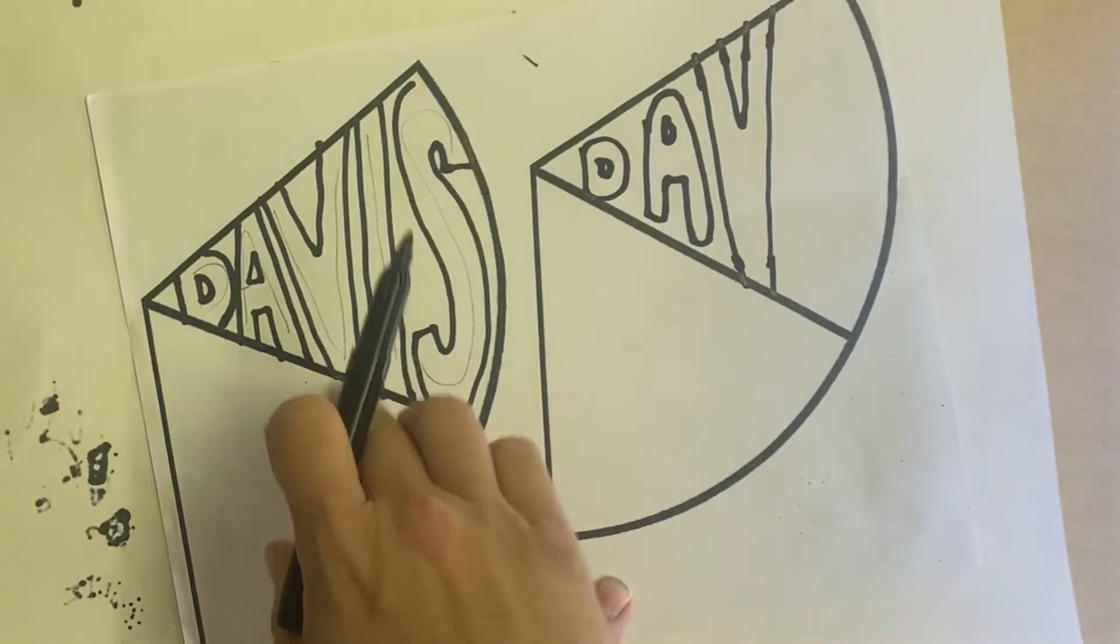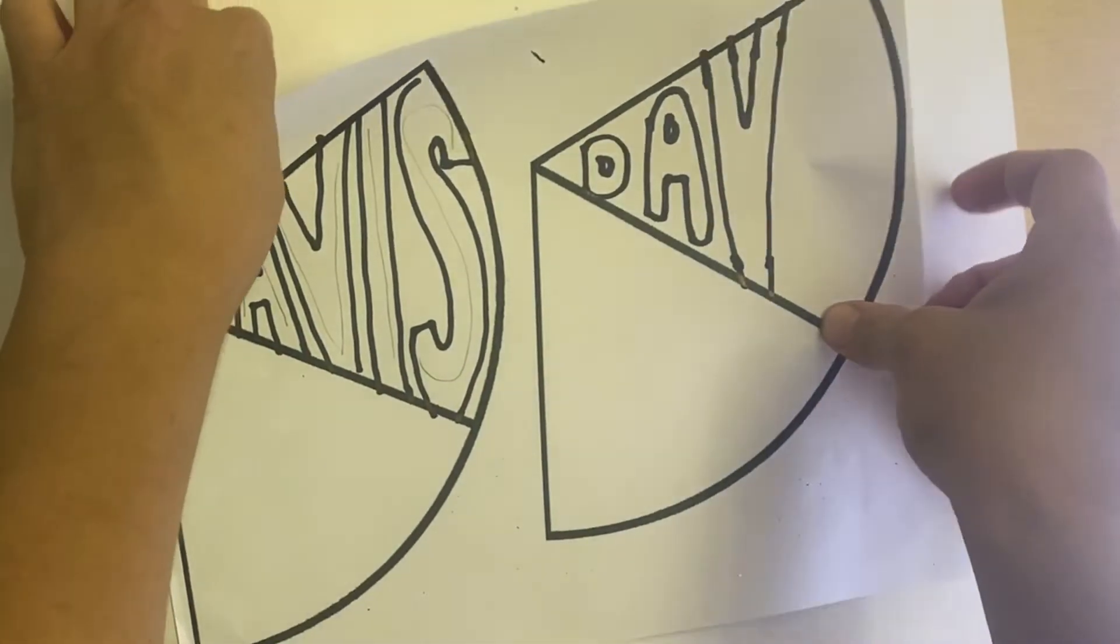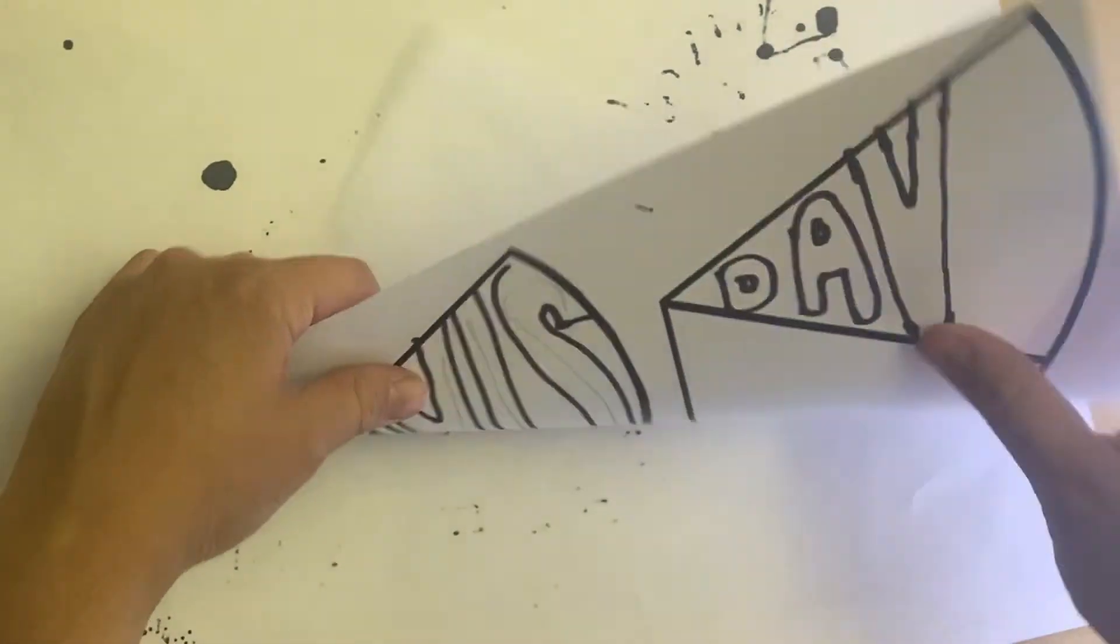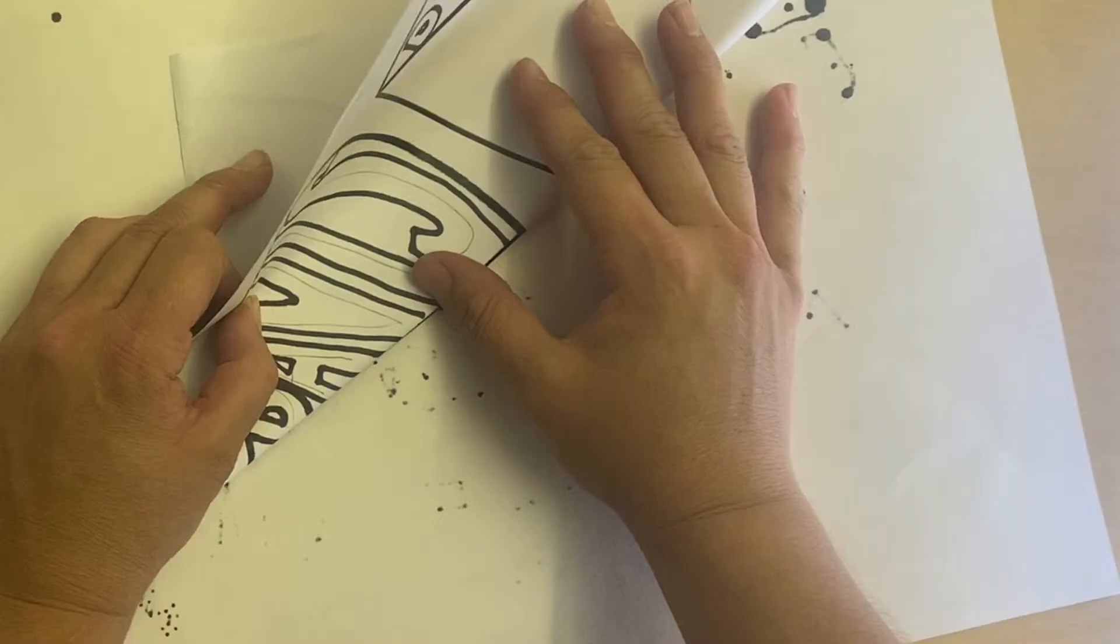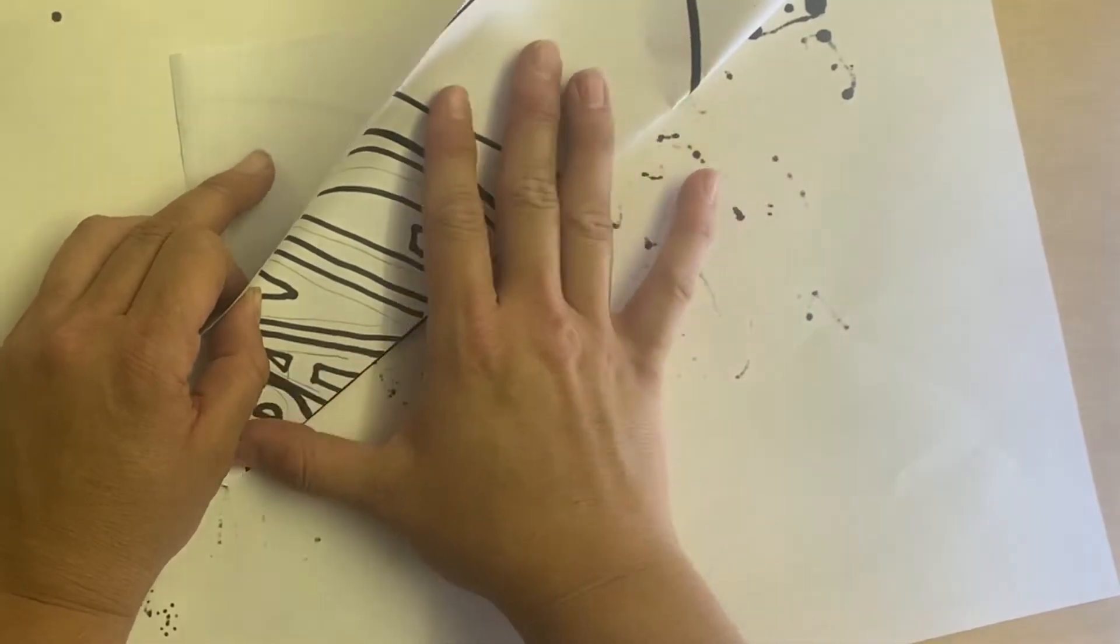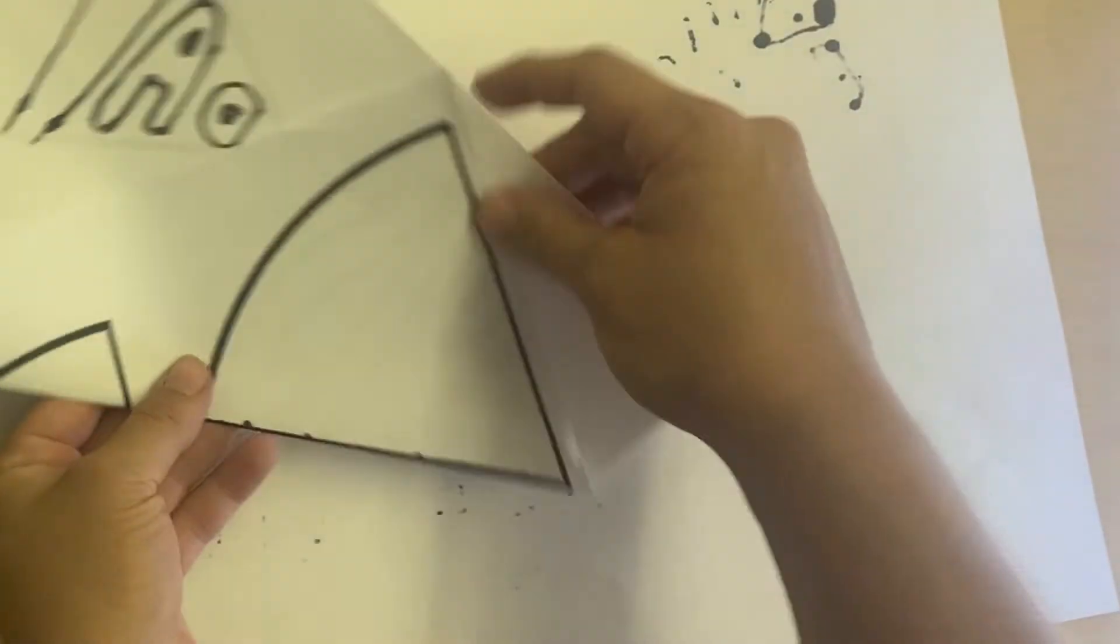We only need one good one, so I'm going to do this one, my Davis letters. What you have to do is fold it on the line. We're going to create a symmetrical piece - this is symmetrical like butterfly wings, the same on either side of the line.